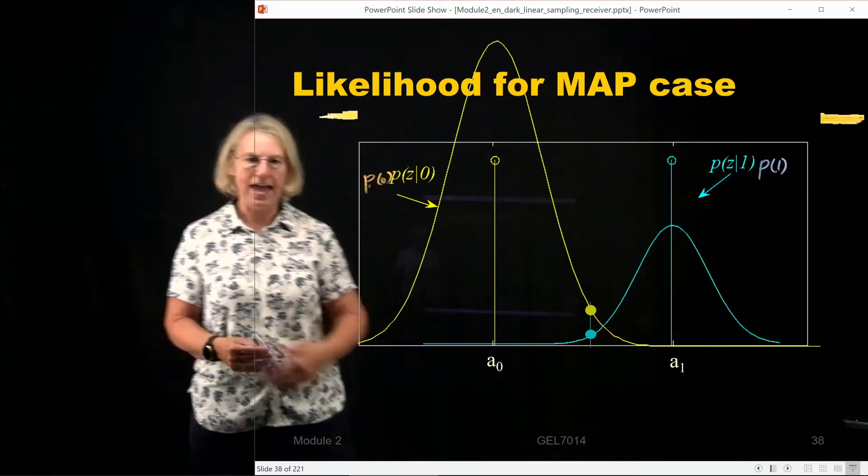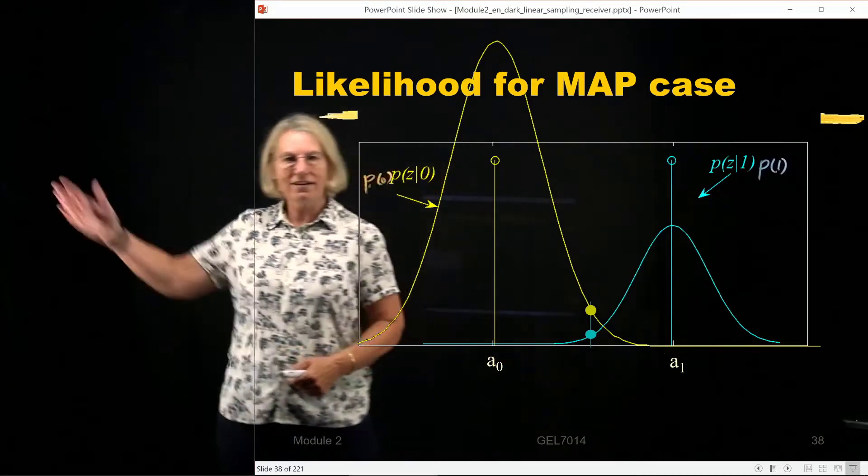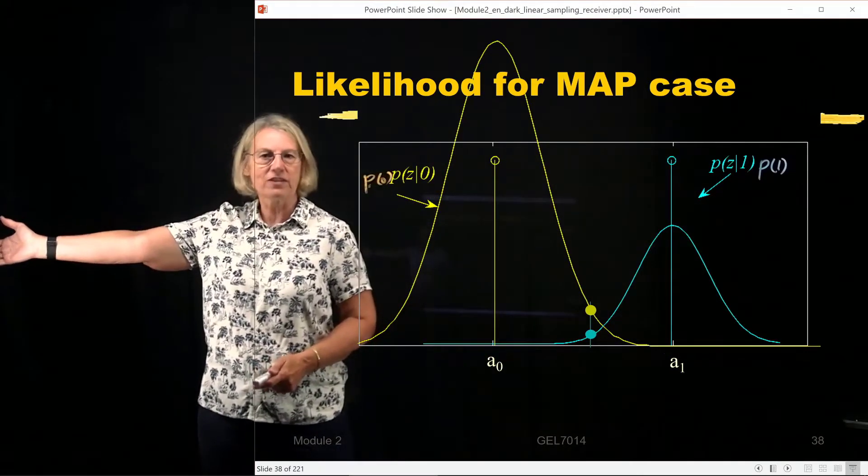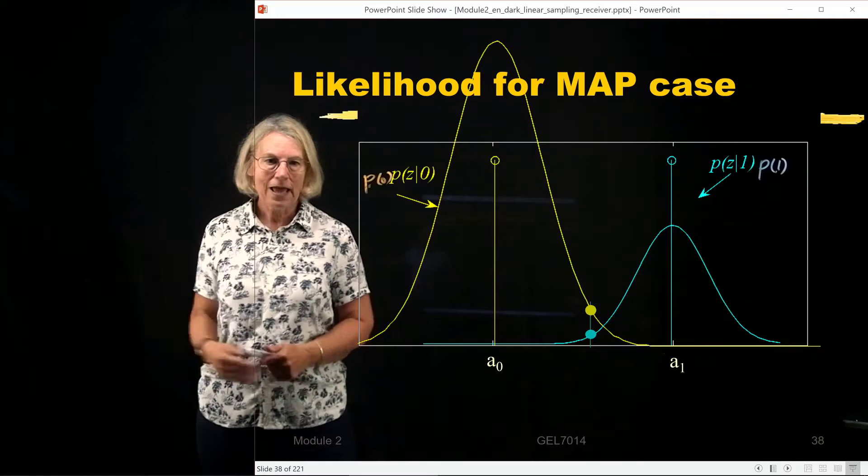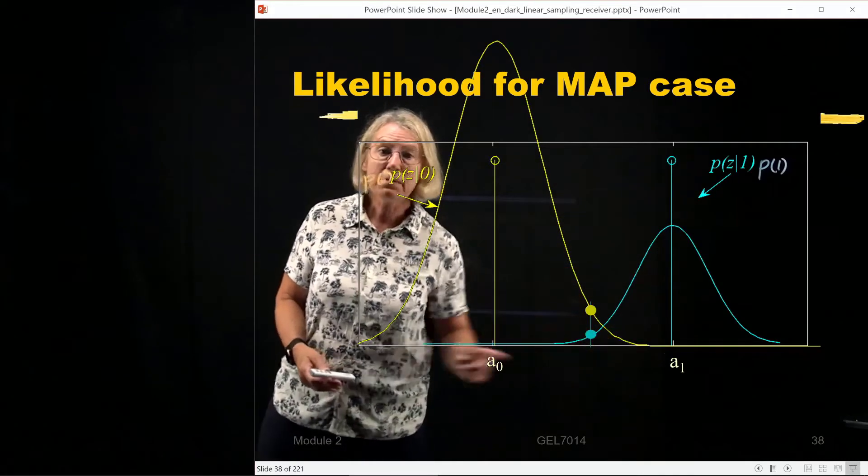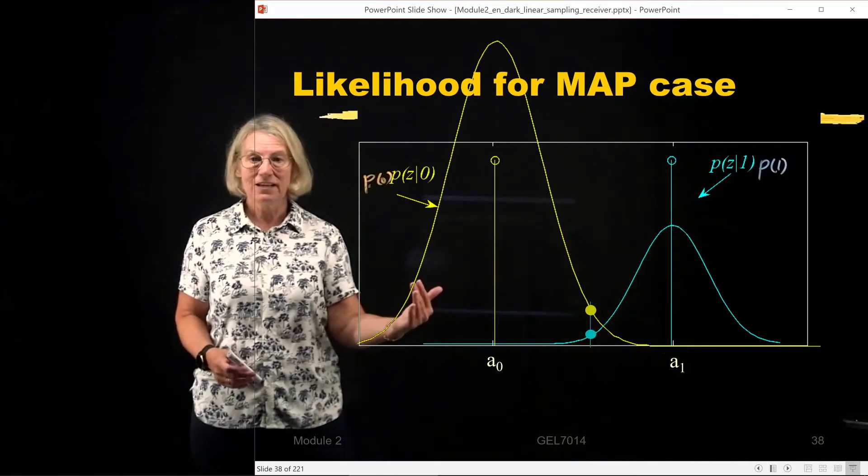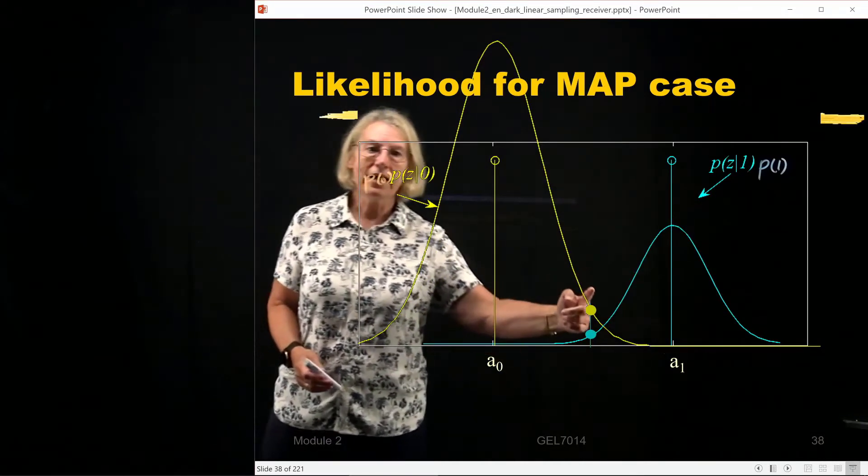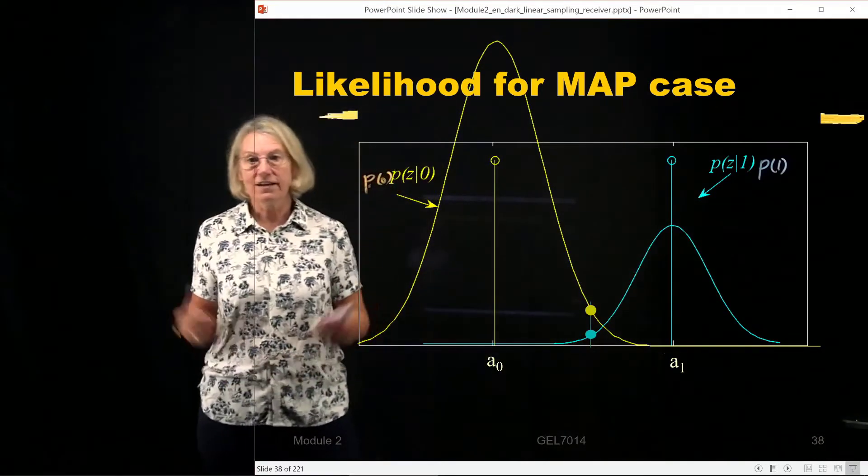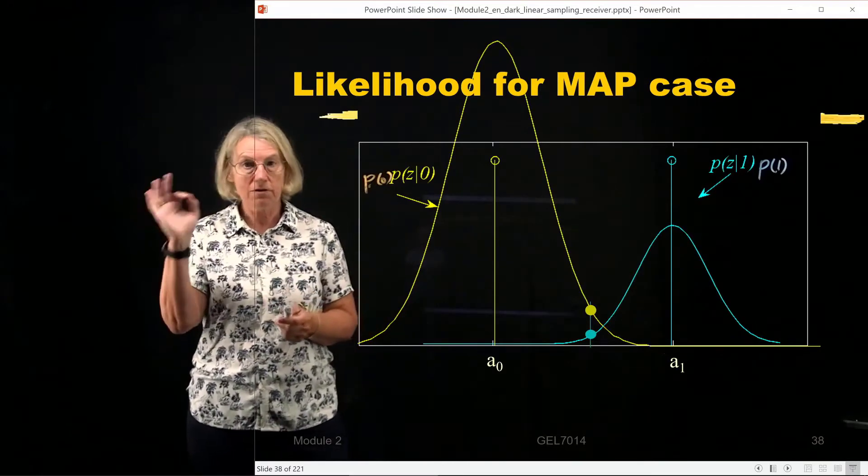For instance if I have the same test statistic value that I had in my previous example, it may be to the right of the midpoint between A0 and A1, but it's to the left of this new intersection point in this case. Even though it's the same number for Z.